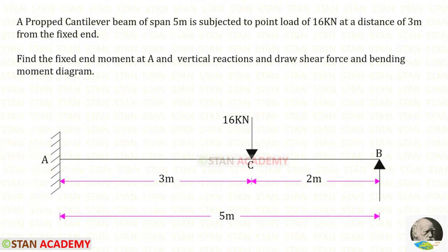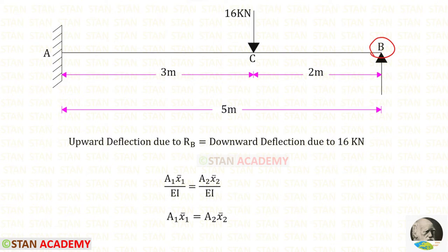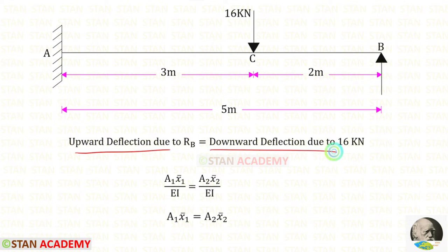In this question we have to find the fixed end moment at A, the vertical reactions, and then draw the shear force and bending moment diagrams. First we are going to find the prop reaction Rb. For that we use the condition that at point B, the upward deflection due to Rb equals the downward deflection due to the load 16 kN.